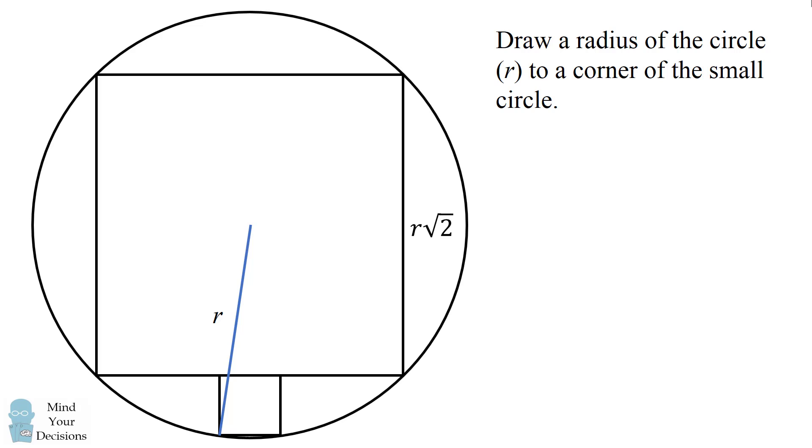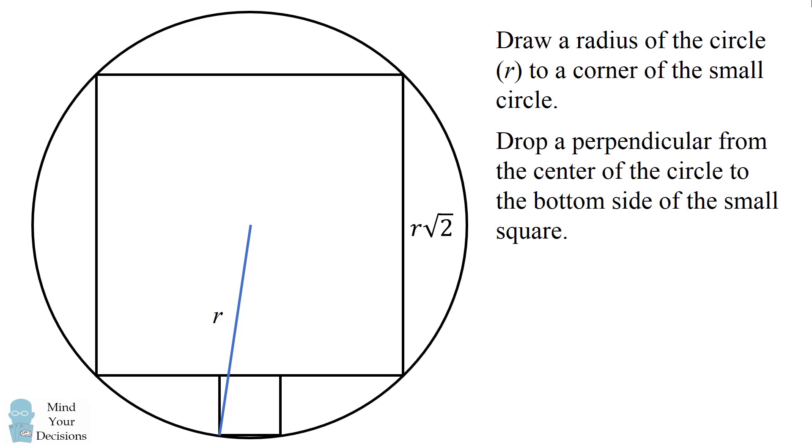Next, we will drop a perpendicular from the center of the circle to the bottom side of the small square. This will bisect the chord of the small square.